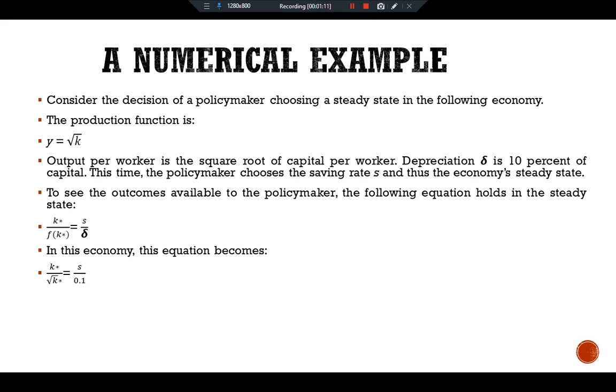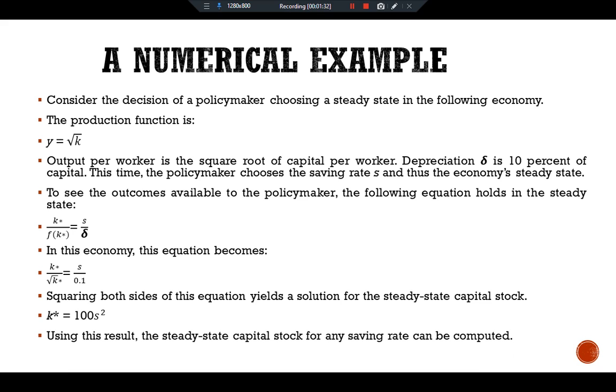Squaring both sides of this equation, here is the solution for the steady state capital: k static equals 100 s squared. Using this result, the steady state capital stock for any saving rate can be computed.